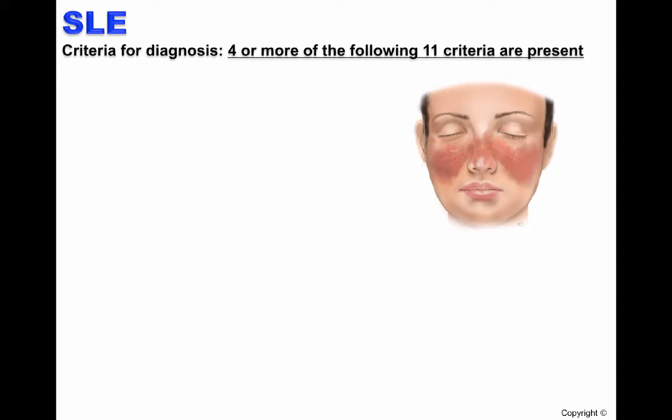In order for SLE to be diagnosed in a patient, at least four or more of the following 11 criteria must be met. The first criterion is malar rash, which is a fixed, flat, or raised erythema, commonly referred to as butterfly rash, as shown in the figure.